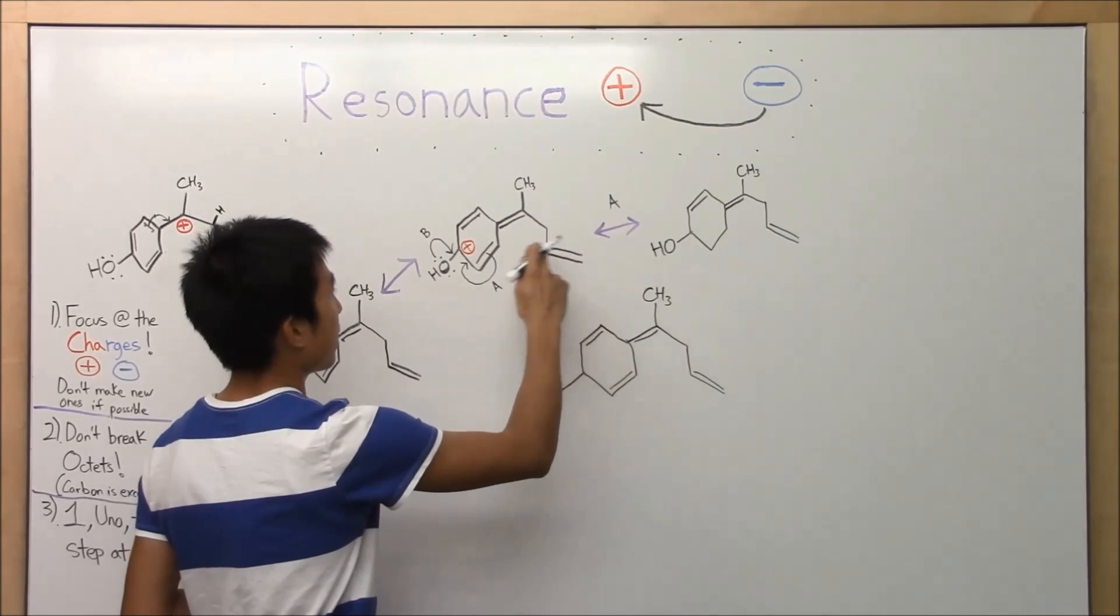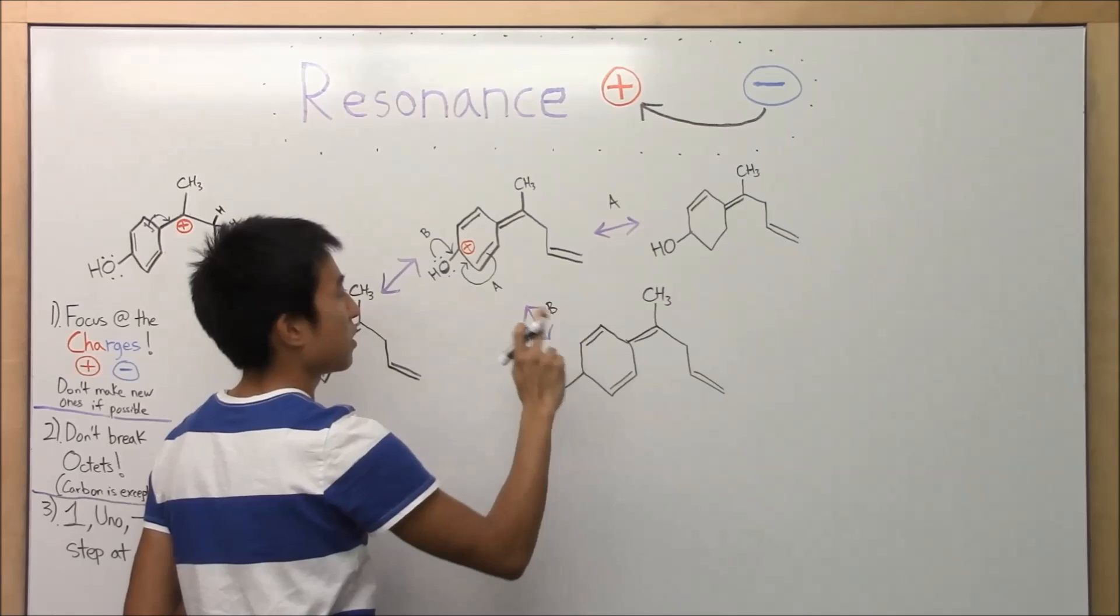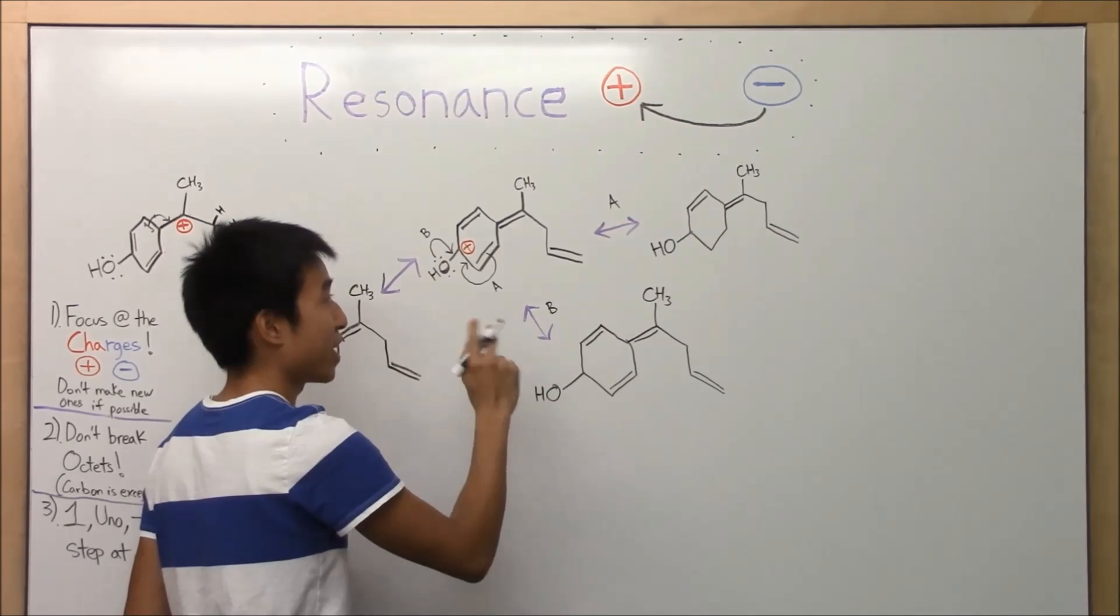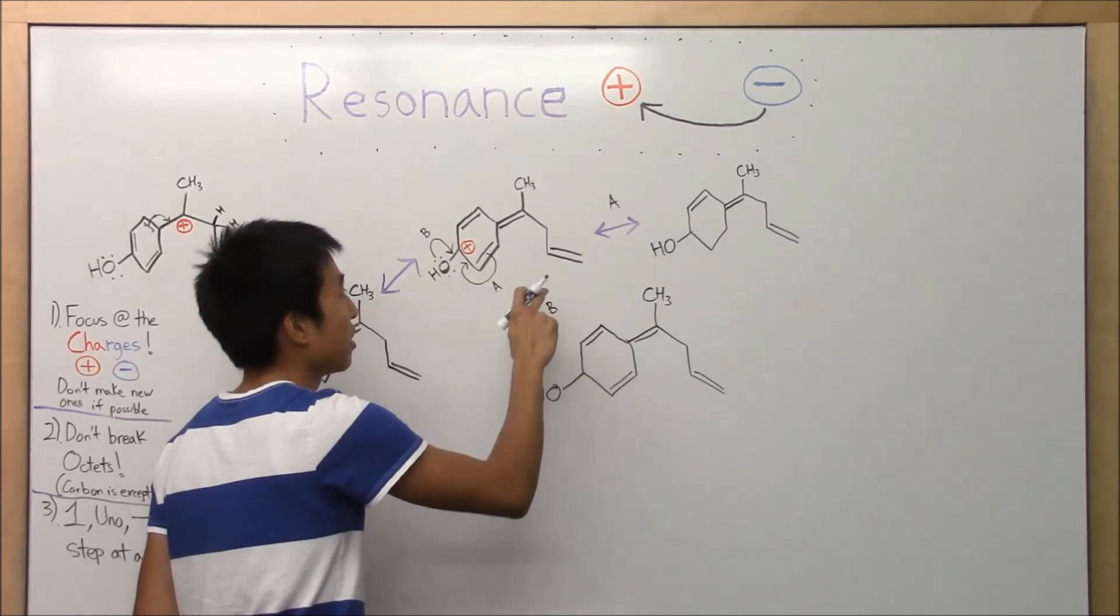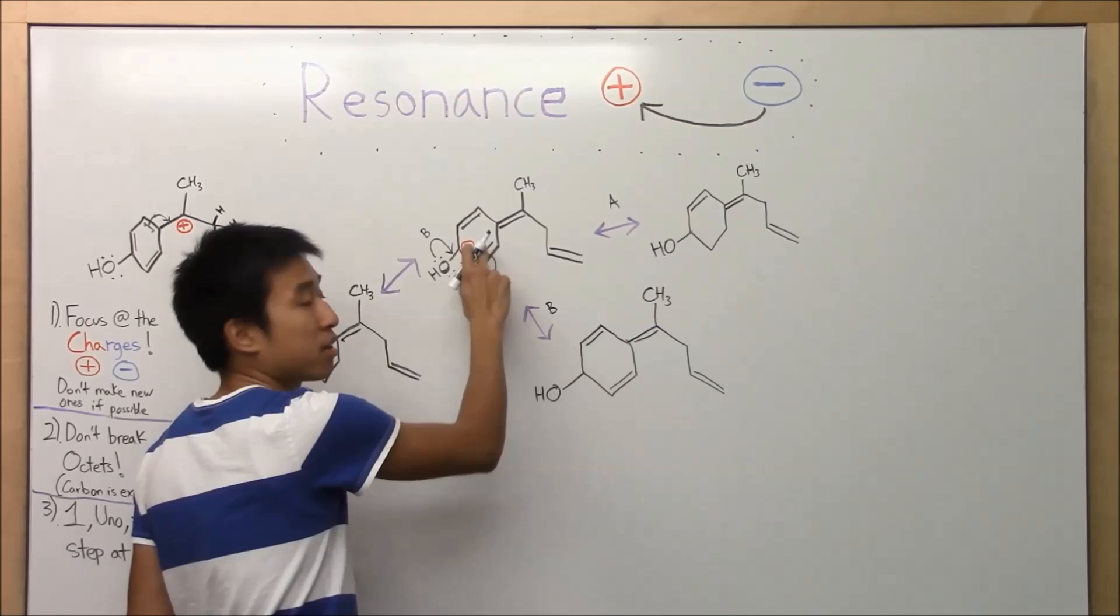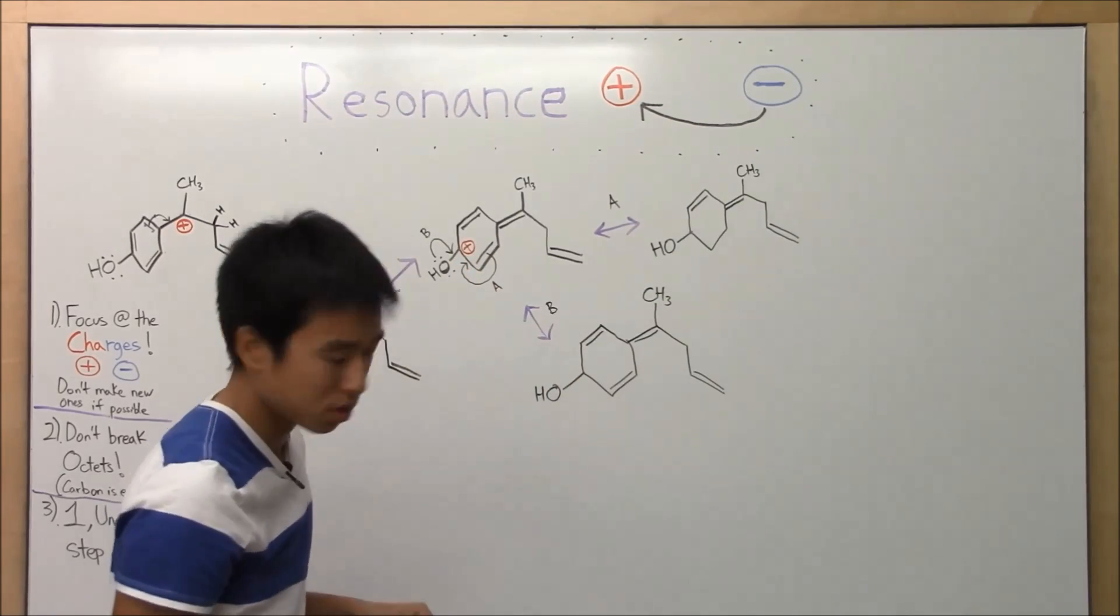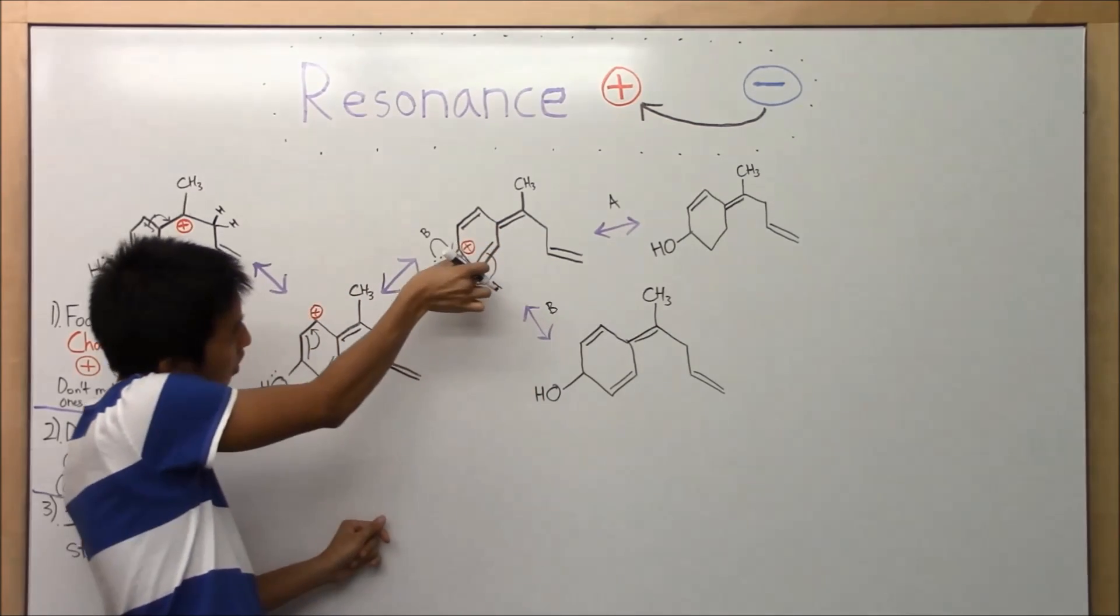For A, I left out the lone pairs and the positive charge. For, let me, okay. For A. Jeez, this is going to be a long video. Okay, so for A, I left out this pi bond because we know we moved it. We know the positive charge is gone. So, just like before, these two electrons here are now here.